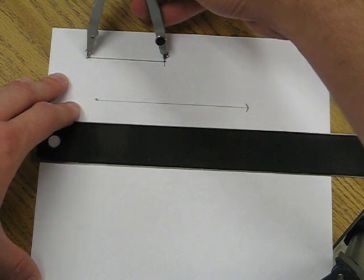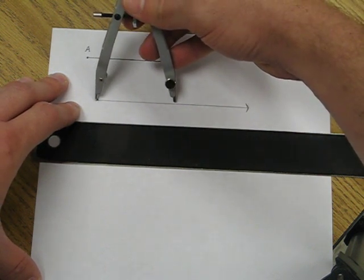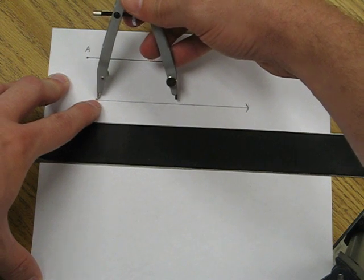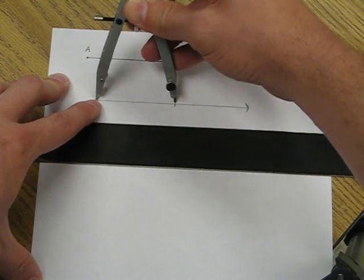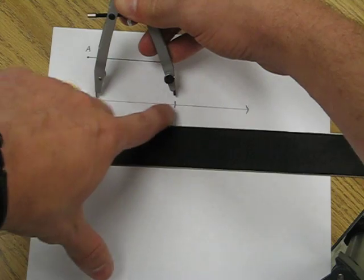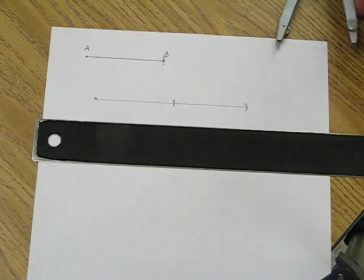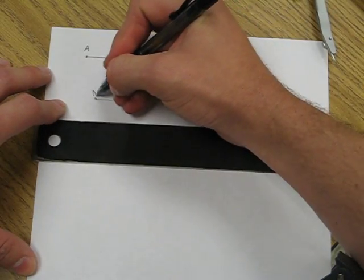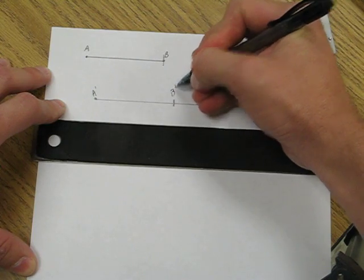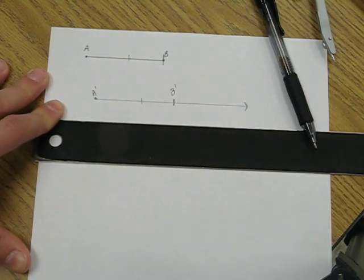And the last and final step is to actually transfer that down to our ray. Fixed point on the end point of the ray. And then we can mark off a little piece. And that is the length of my segment. So this could be A prime and B prime. Now we have two congruent segments. Thanks.